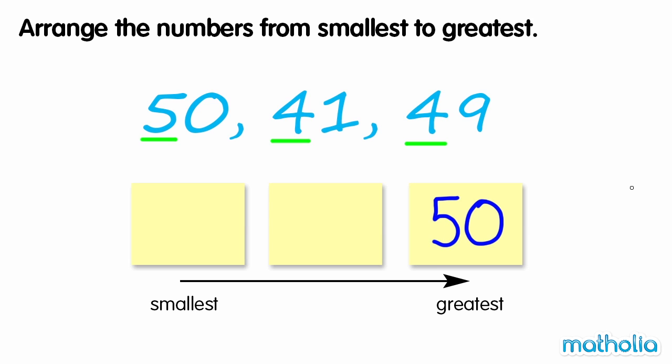Forty-one and forty-nine both have four tens. So we compare the digits in the ones place. One one is less than nine ones. So forty-one is the smallest number. From smallest to greatest, the numbers are forty-one, forty-nine and fifty.